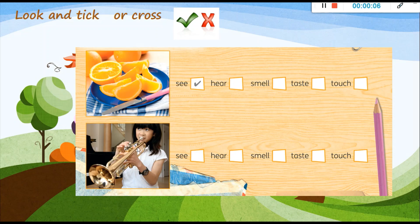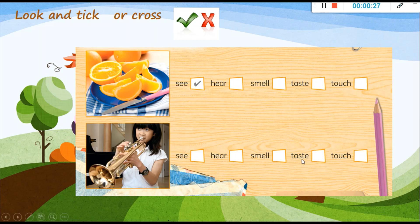Now, what is this? It's a trumpet. Can you see it? Yes. Tick. Can you hear it? Yes. Can you smell a trumpet? No. Cross. Can you taste a trumpet? No. Cross. Can you touch it? Yes. Put a tick.